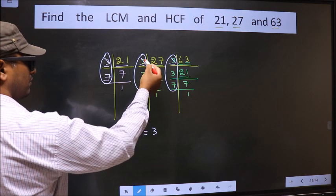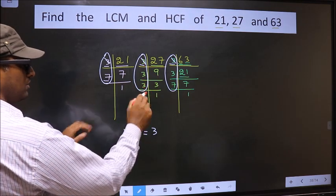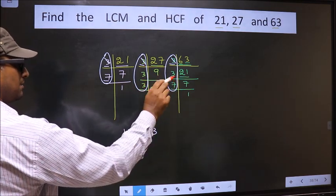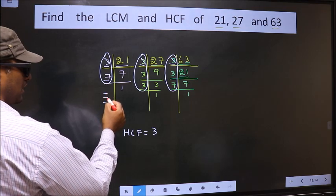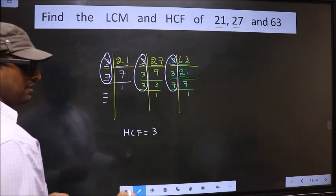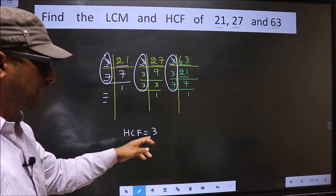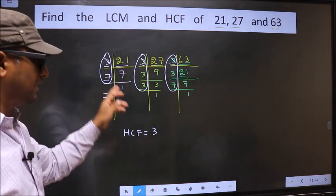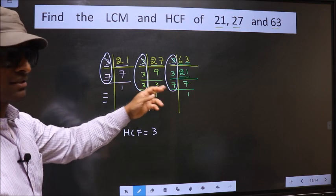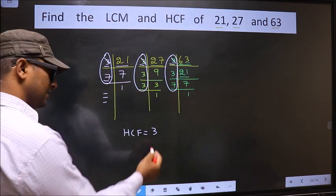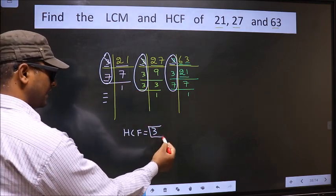Next number 7. Do we have 7 here? No. So no need to check in the other place. No more numbers have been left. Therefore, we got only one number 3 present in all the 3 places. So 3 itself is our HCF.